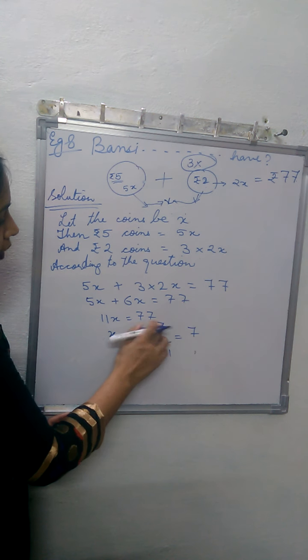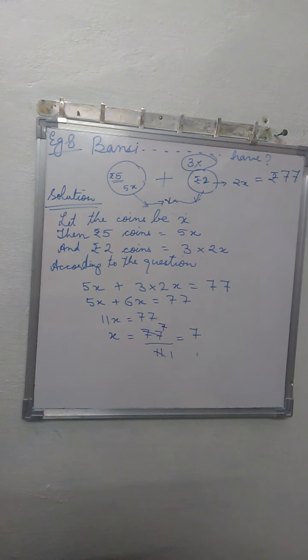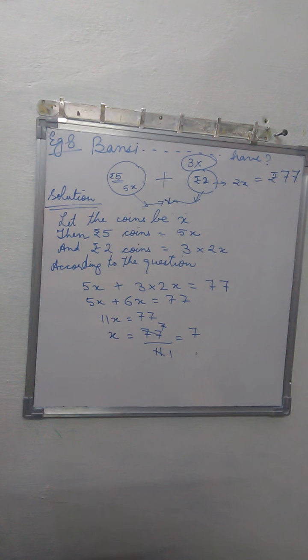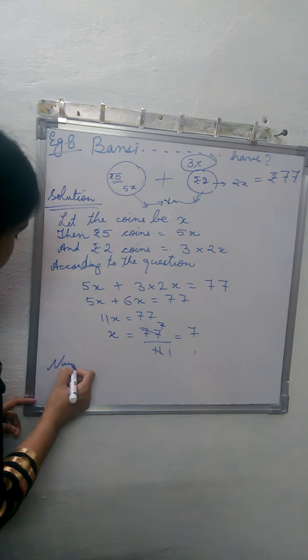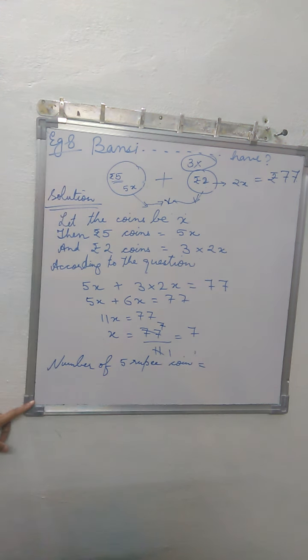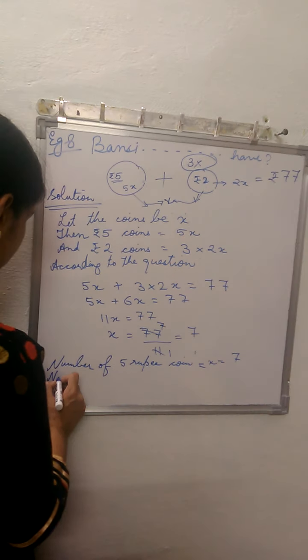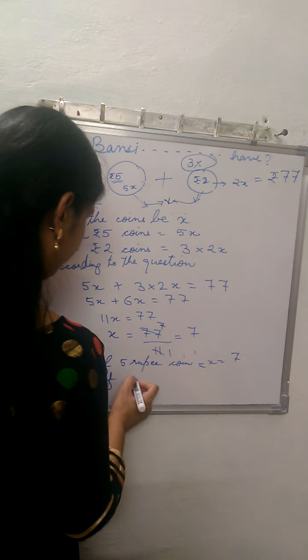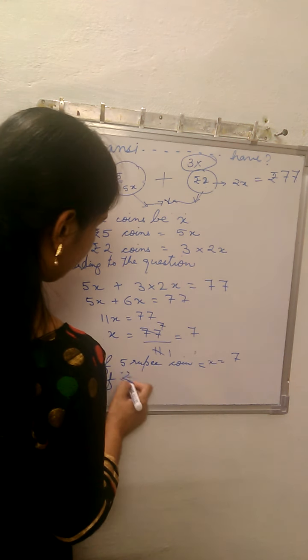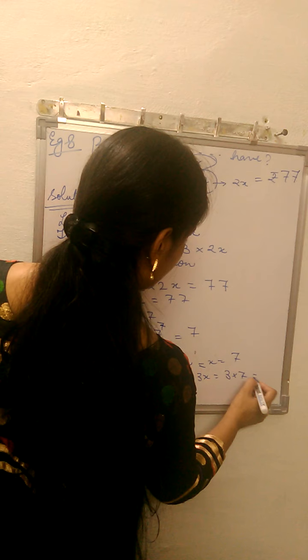Now we need to find out how many coins of each type. Number of 5 rupee coins is X, which equals 7. Number of 2 rupee coins is 3X, that is 3 into 7, which gives us 21.